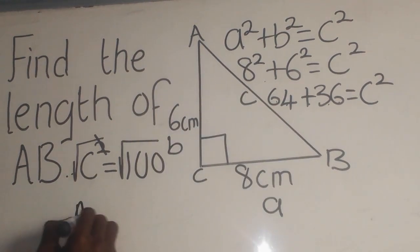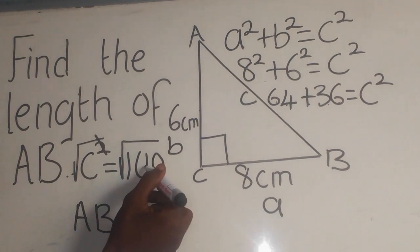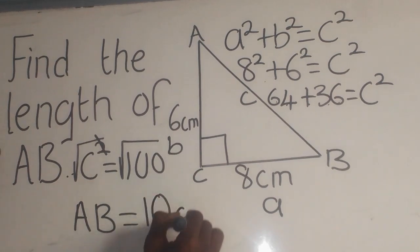So AB, which is c, is equal to the square root of 100, which is 10 centimeters. That is the answer.